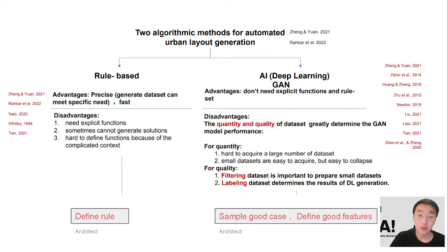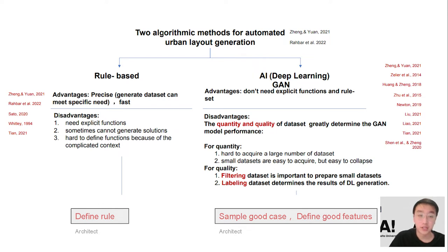In a data-driven approach for urban layout, our role is to find good urban design samples and define the machine learning features. We do not need to define the design rules like before anymore. Sampling and architecture features definition are the key things architects can do to determine whether the machine can learn the ability to layout buildings in a way that better fits the specific design context.